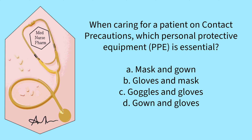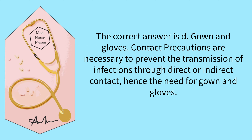When caring for a patient on contact precautions, which personal protective equipment is essential? Mask and gown, gloves and mask, goggles and gloves, or gown and gloves? The correct answer is D, gown and gloves. Contact precautions are necessary to prevent the transmission of infections through direct or indirect contact, hence the need for gown and gloves.